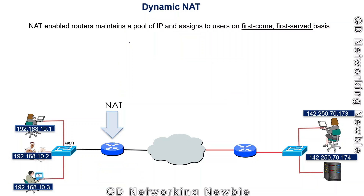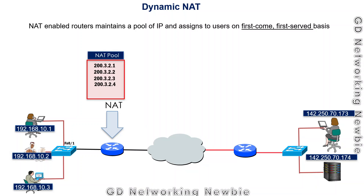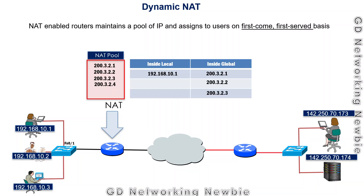In dynamic NAT, the assignment is done dynamically. The router has a pool of public IP addresses. When a request comes from a user, the router looks into the pool and assigns an available IP address on a first-come, first-served basis. The next request gets the next available address from the pool.